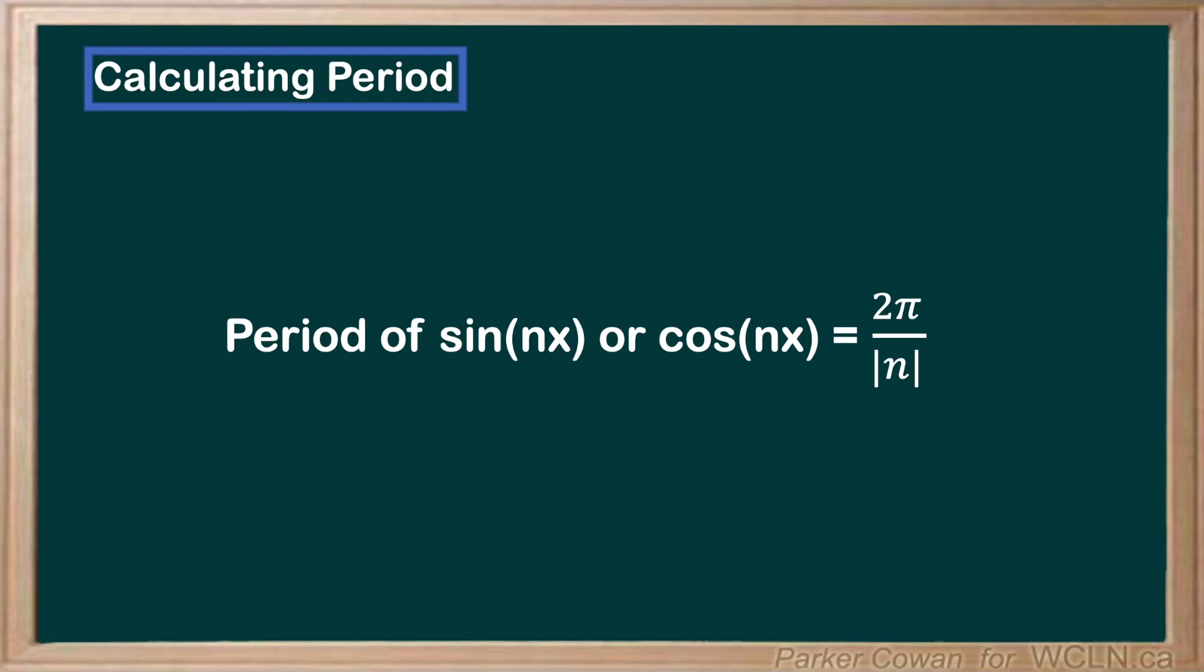We take the absolute value because period should always be positive, and sometimes the coefficient n may be negative, so we just want to cancel that out.